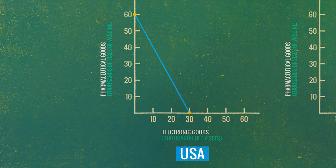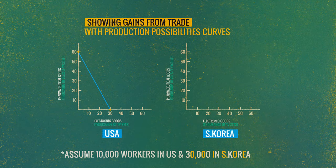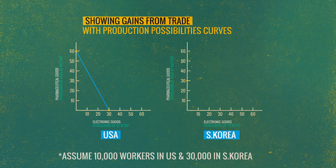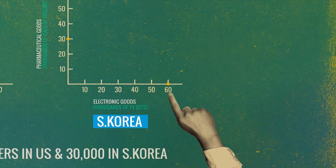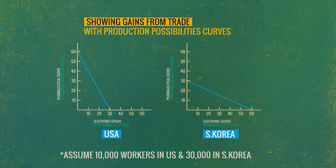We can do the same for Korea. If all 30,000 Korean workers produce vaccines, we get 30,000 vaccines — one per worker. If they all produce TVs, they produce two each, giving 60,000 TVs. That's the production possibilities curve for Korea. The two curves are different, and that's what they look like when trade is not possible.